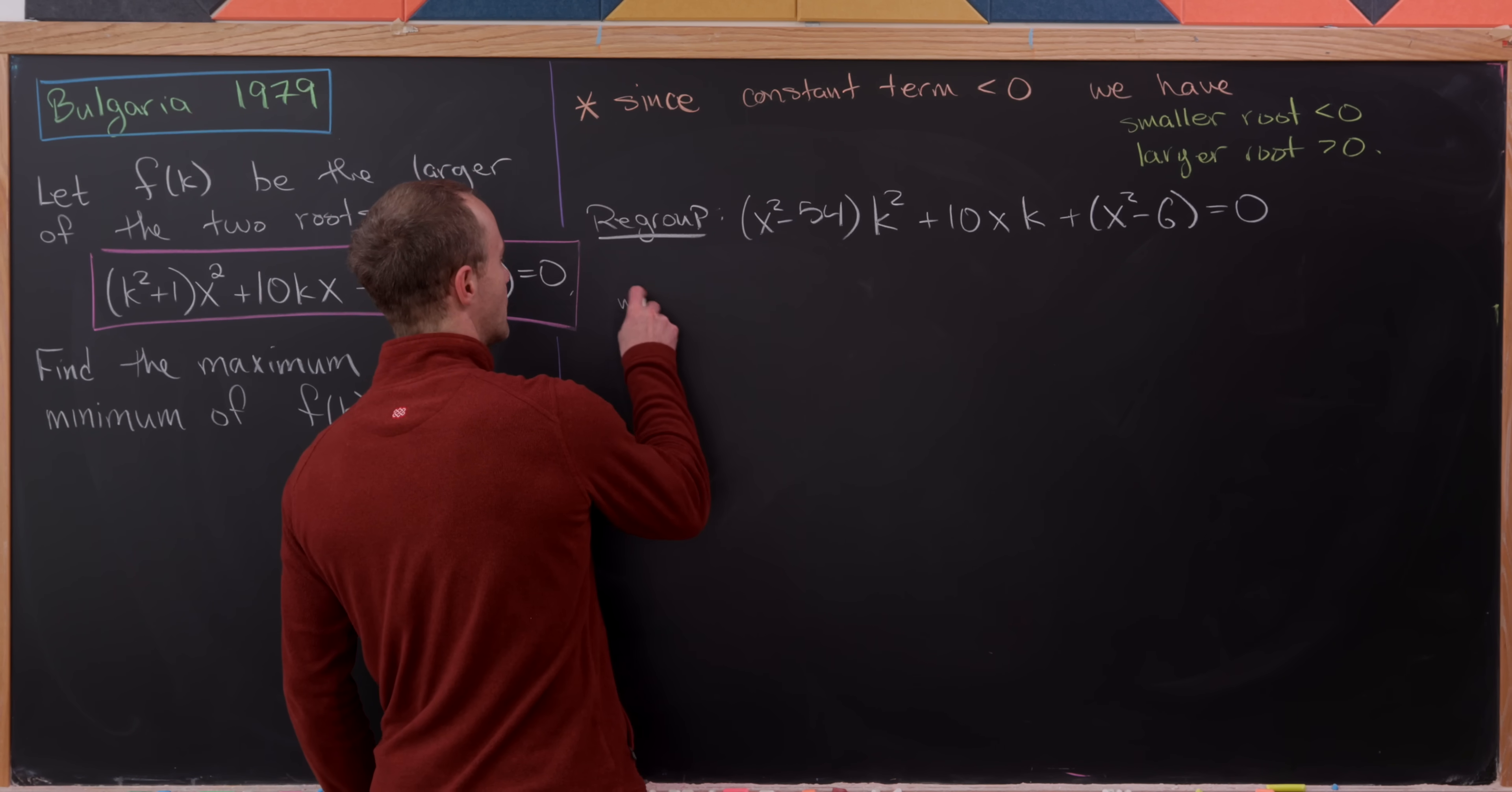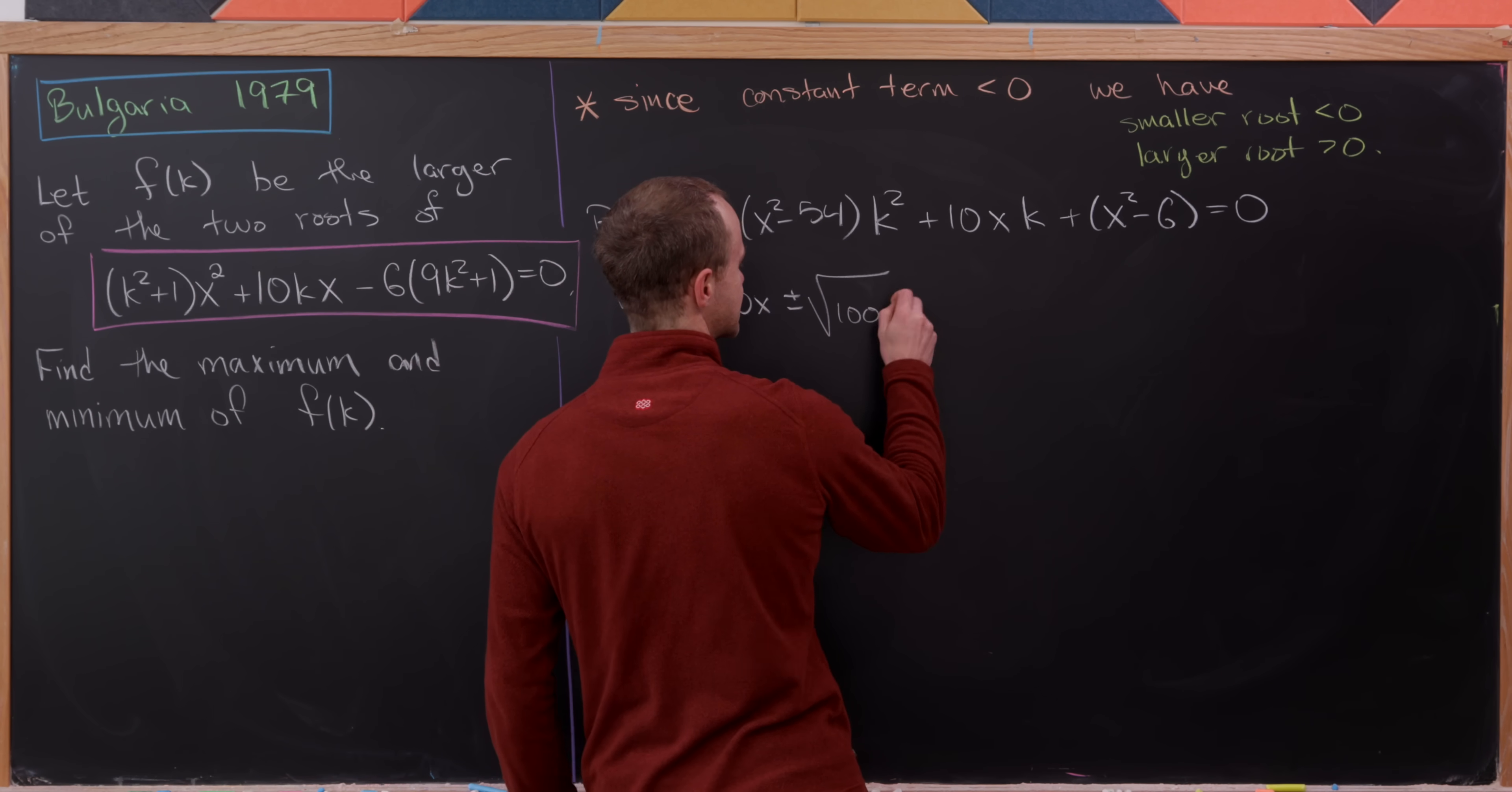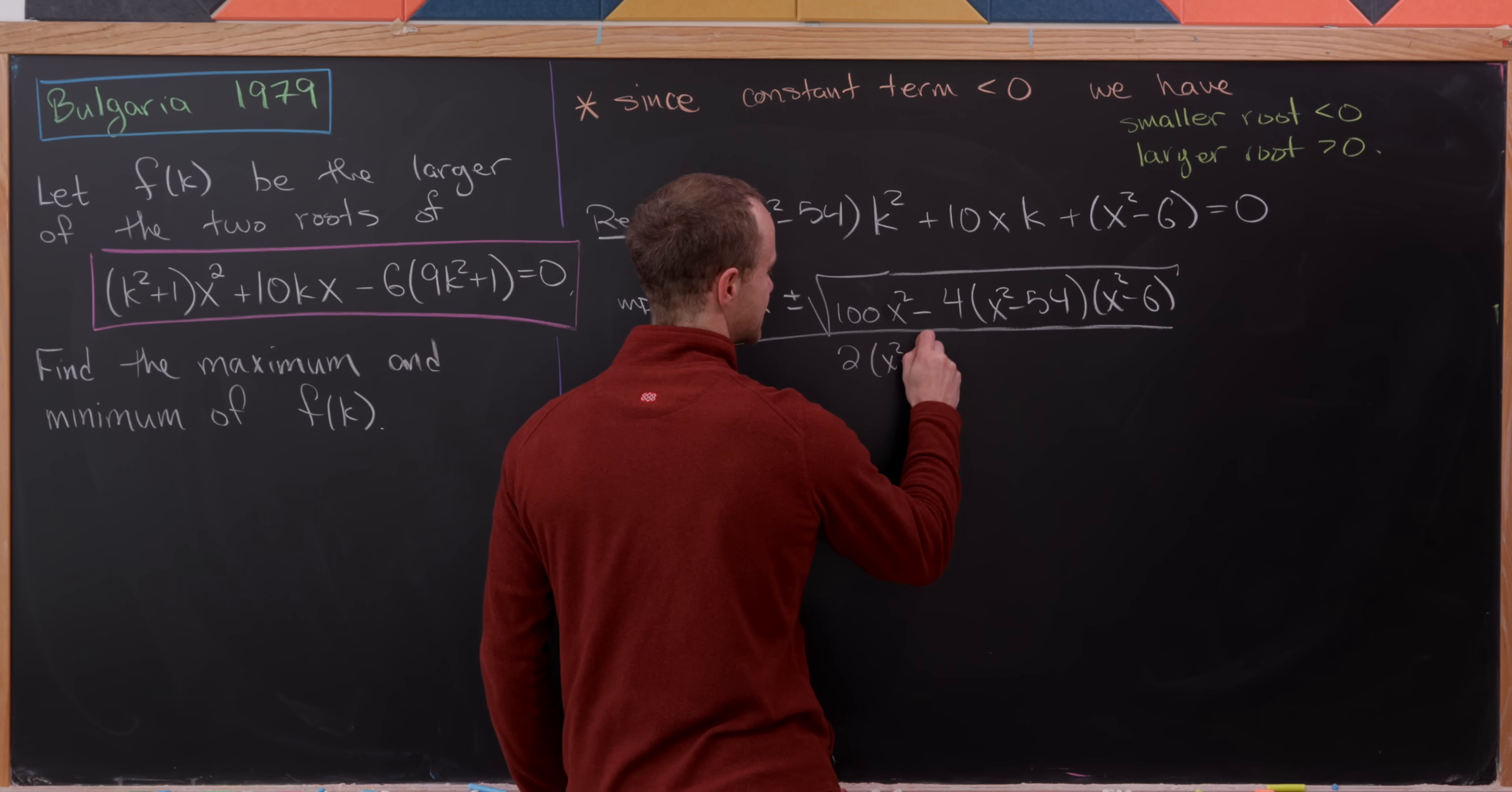Solving for k, we'll use the quadratic formula. We'll have -b, which is -10x, plus or minus the square root of b², which is 100x² minus 4ac. That'll be 4(x² - 54)(x² - 6). And this is all over 2(x² - 54).